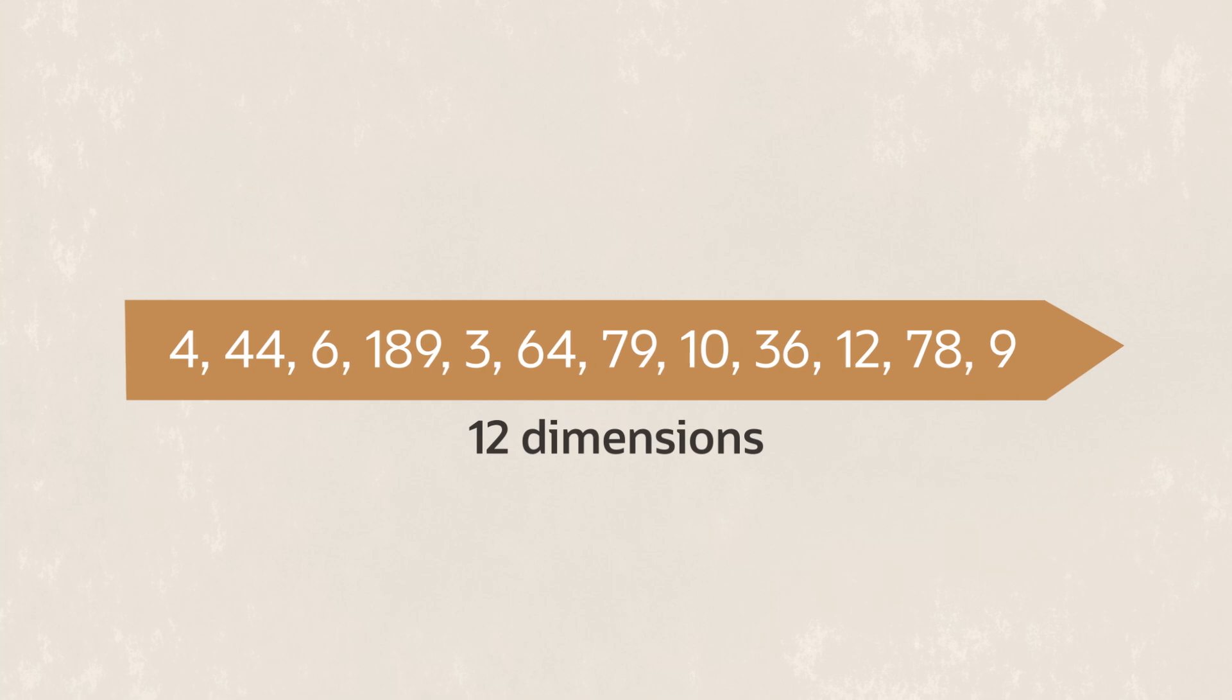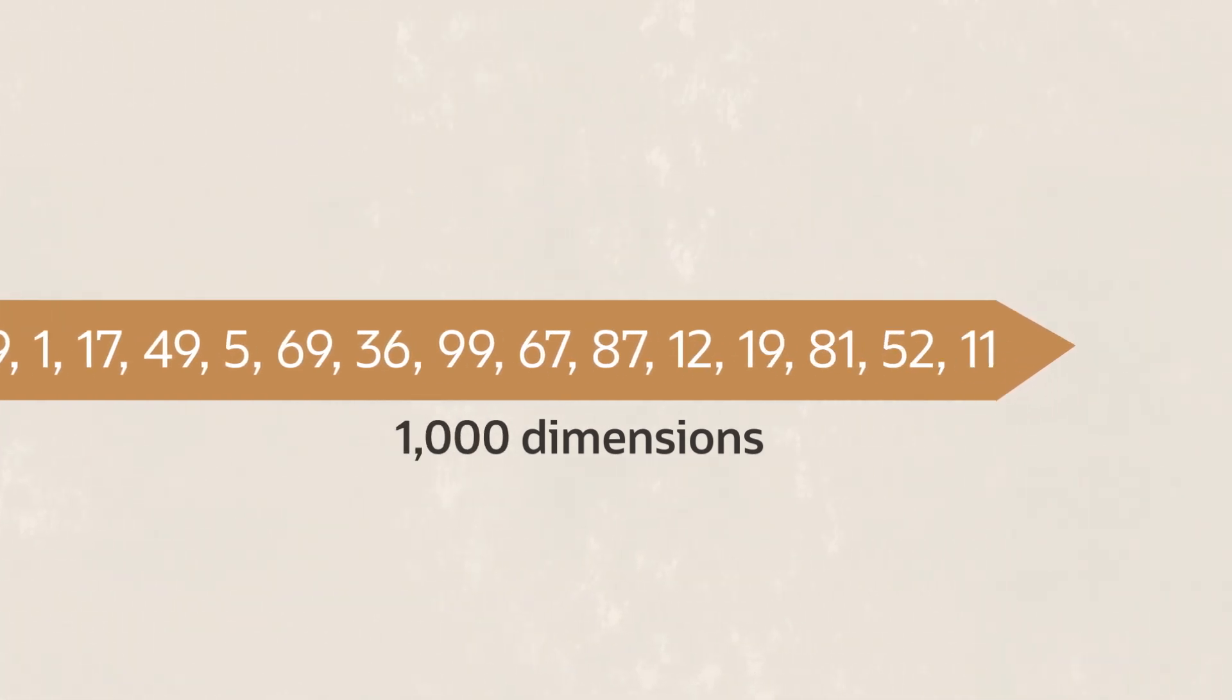The embedding gives a mathematical representation of the object that can be easily used by computers. Our simple vector has 12 dimensions, but a vector embedding can run to over a thousand digits and a database might hold millions of vectors.